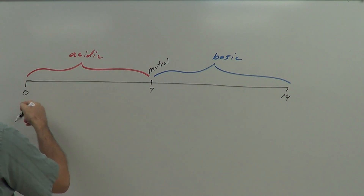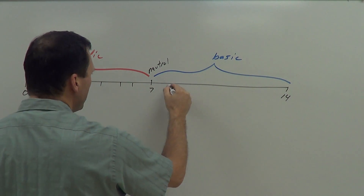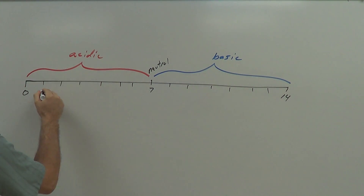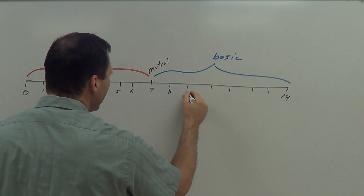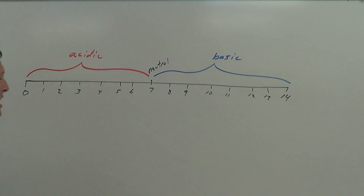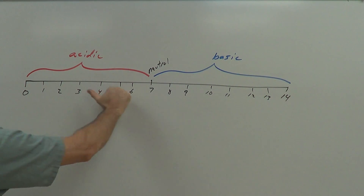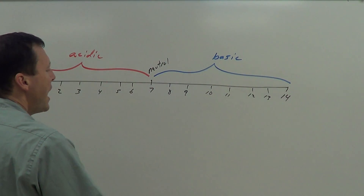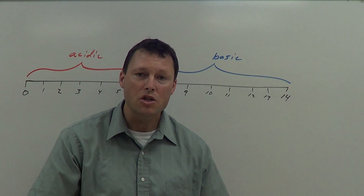Let's write the numbers in: 1, 2, 3, 4, 5, 6, 7, 8, 9, 10, 11, 12, 13 — that's our pH scale. The further we go to the left, the lower the number, the more acidic our solution is going to be. And the higher the number, the more basic our solution is going to be.